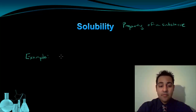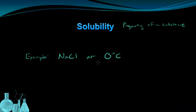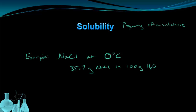Let's take a look at an example. We'll look at the solubility of sodium chloride — regular table salt — at 0 degrees Celsius. This is our given temperature for the solubility we're going to discuss. For table salt at 0 degrees Celsius, you can dissolve 35.7 grams of sodium chloride in 100 grams of water. This statement gives the solubility of sodium chloride at this particular given temperature.